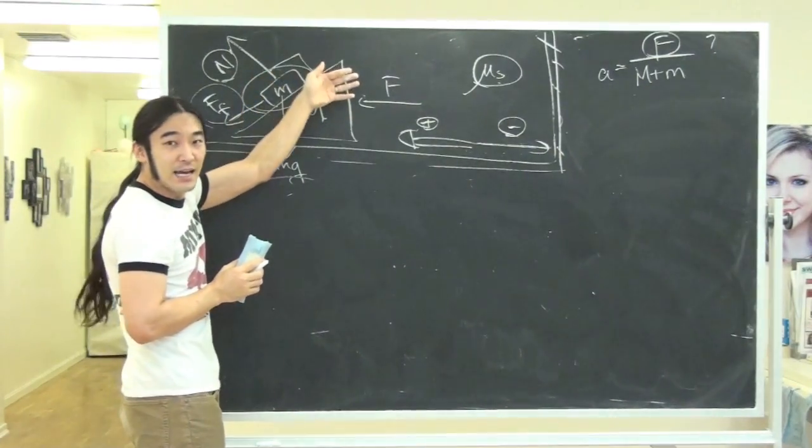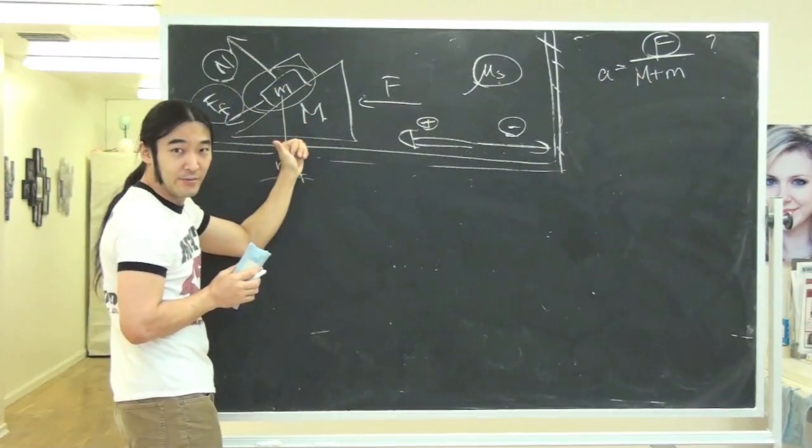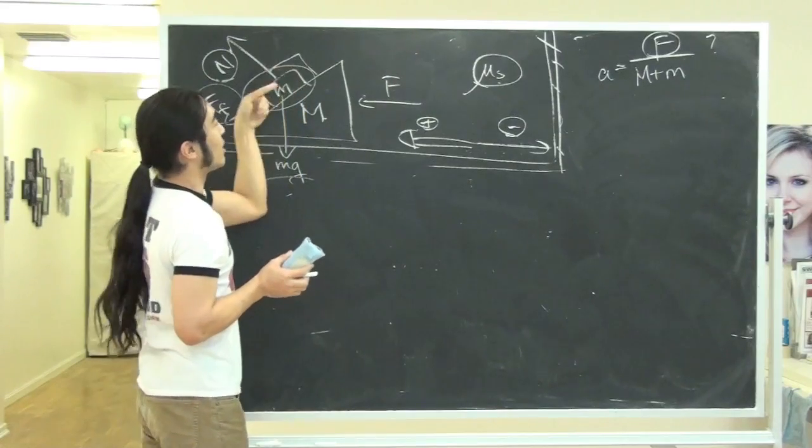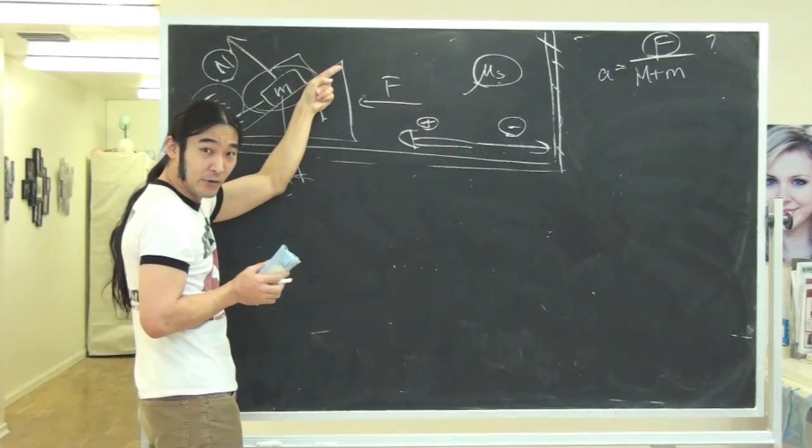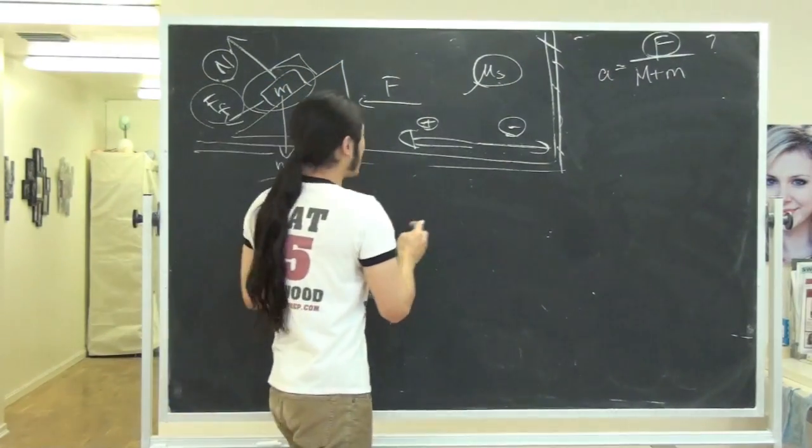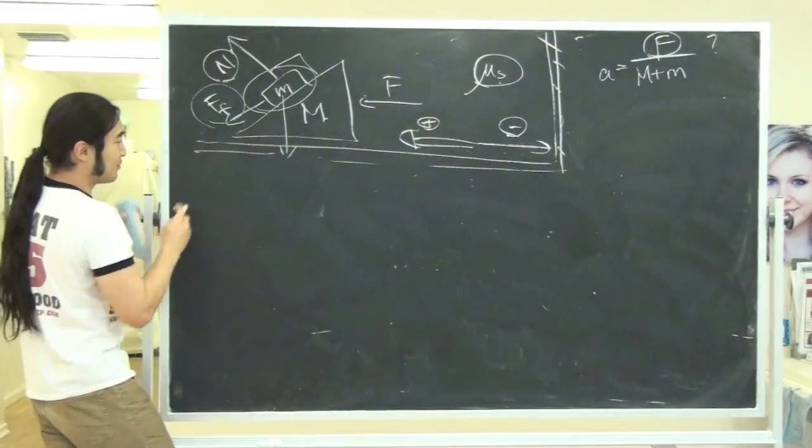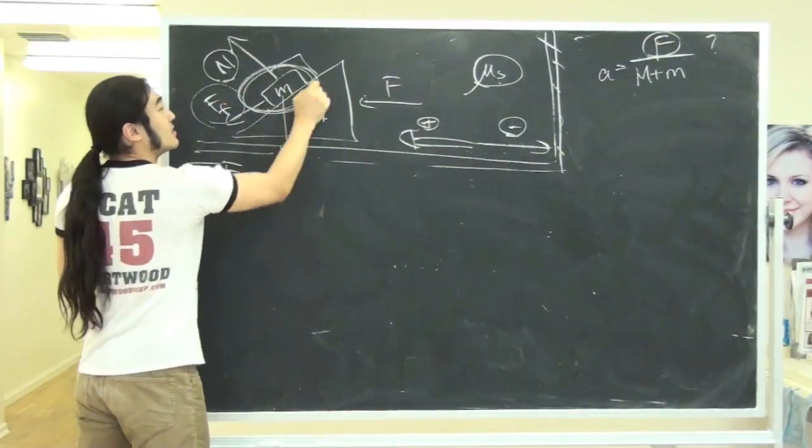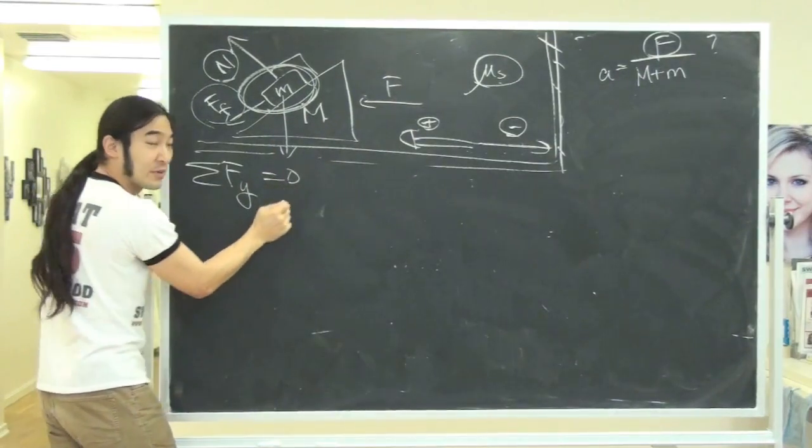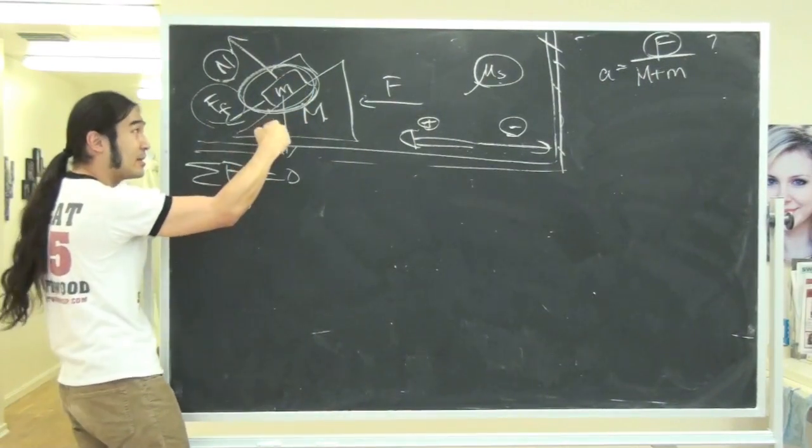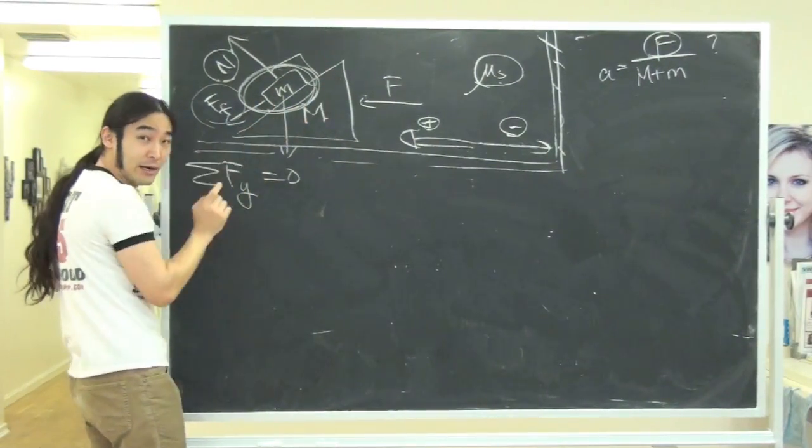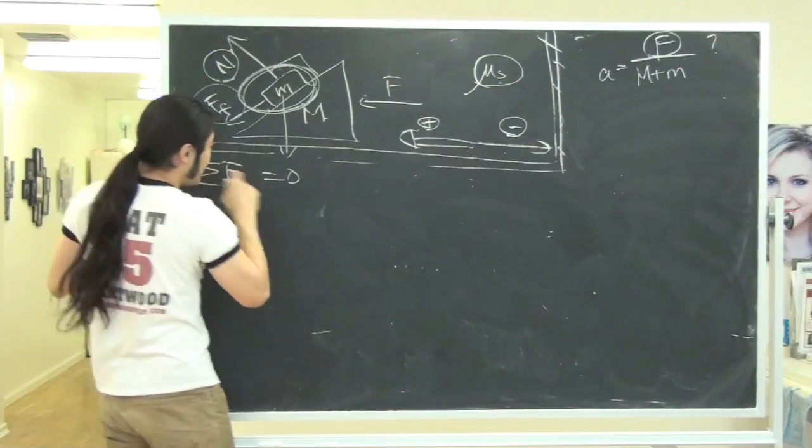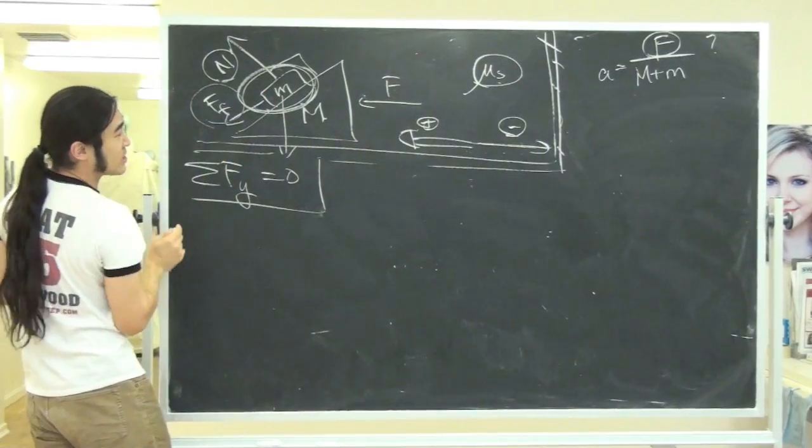So right before this guy slides, he's not moving up or down. The moment he slides, he begins to move up, like move up the ramp. Everybody agree? So before we slide, let's go back to that point in time, you know the sum of forces in the y direction on this guy, this little block, has got to be zero, because if it weren't zero, he'd be sliding down the incline or going up the incline. So let's put that together.